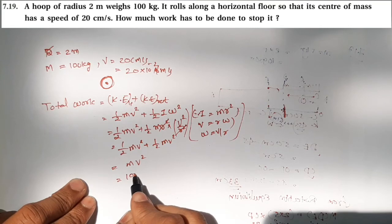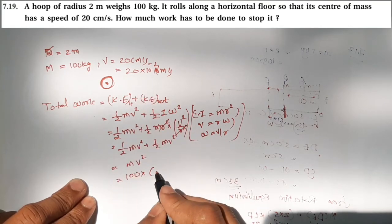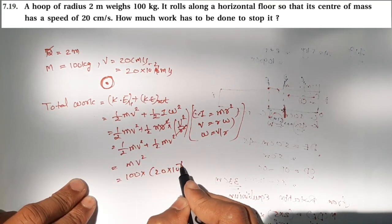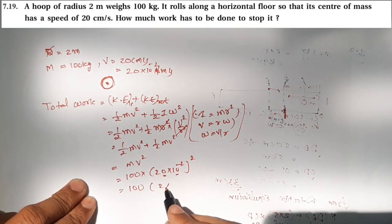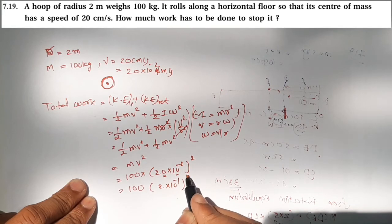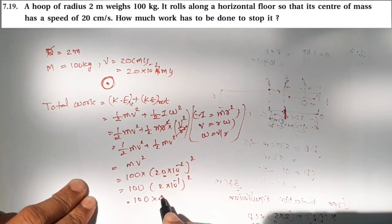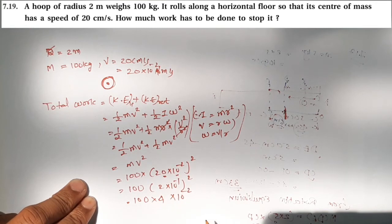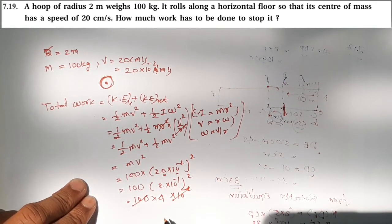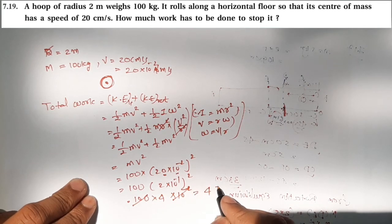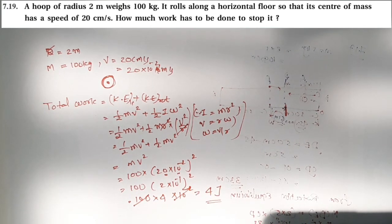Mass is 100, v is 20 times 10 to the minus 2. We can write this as 2 times 10 to the minus 1. Squaring gives 4 times 10 to the minus 2, and 100 cancels out. So the answer is simply 4 joules.